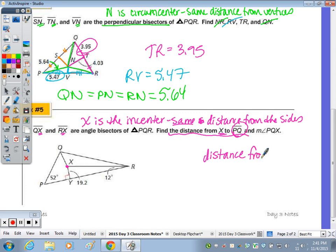So the distance from X to PQ equals, now I'm not given the distance from X to this side because there's nothing drawn. I'm not given the distance from X to this side, there's nothing drawn. But I am given the distance from X to PR. So if this is 19.2, any distance from the center to a side is going to be 19.2.